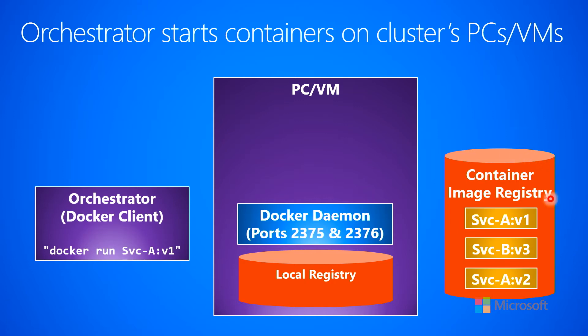We have a container image registry here on the far right. This is usually some external registry where you go and upload your images to. An example of this would be Docker Hub. Let's say we've taken our Service A version 1 container image and loaded it into this registry, along with Service B version 3 and Service A version 2 — uploading these various images into this container image registry, which is usually a network service somewhere in a network.